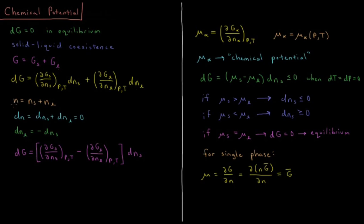We're assuming conservation of matter in a closed system. The total number of moles equals the number of solid moles plus the number of liquid moles. So the change in the total number of moles equals the change in the number of solid moles plus the change in the number of liquid moles, which equals zero because we have conservation of matter — the total number of particles does not change. This means the change in liquid moles is equal to the negative of the change in solid moles.